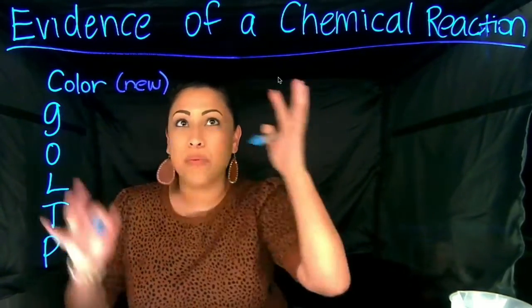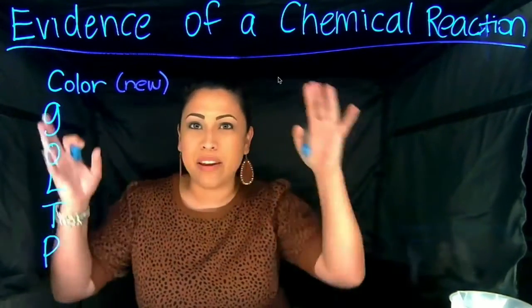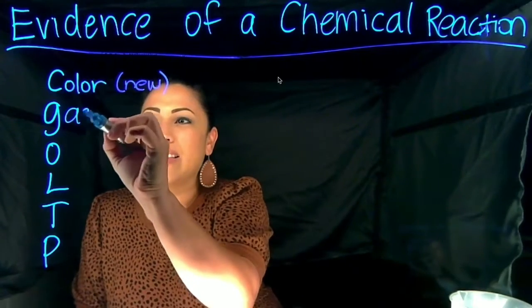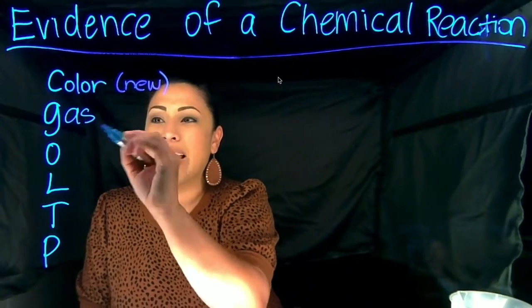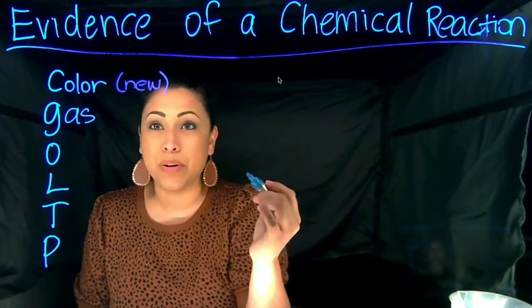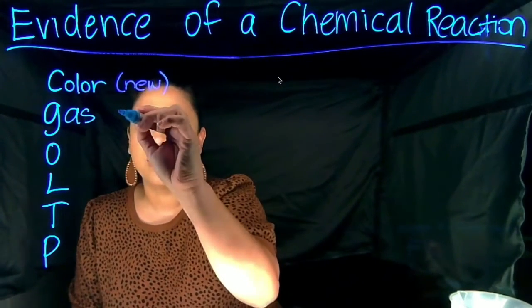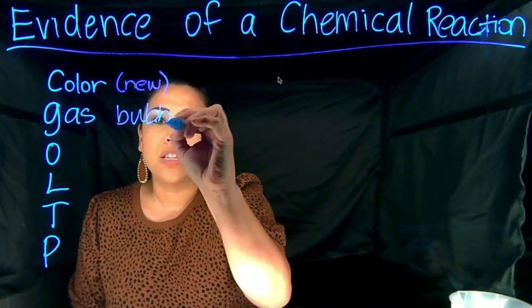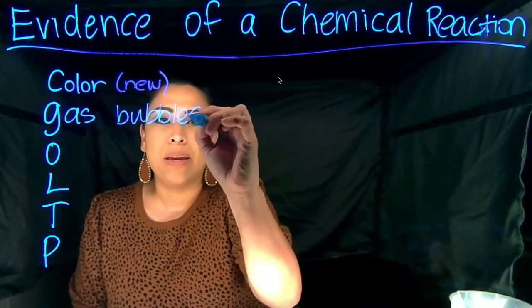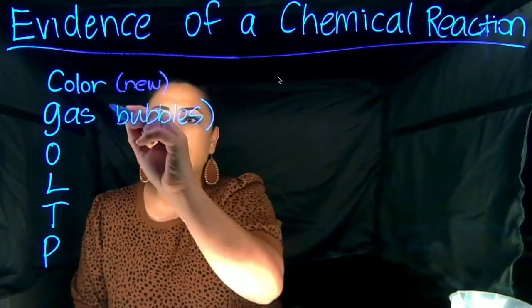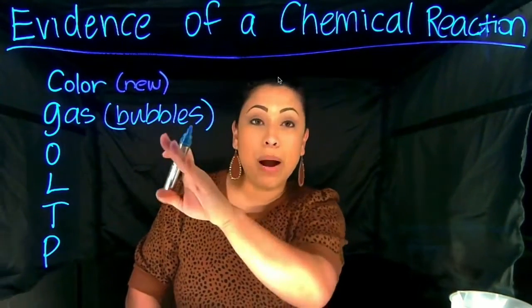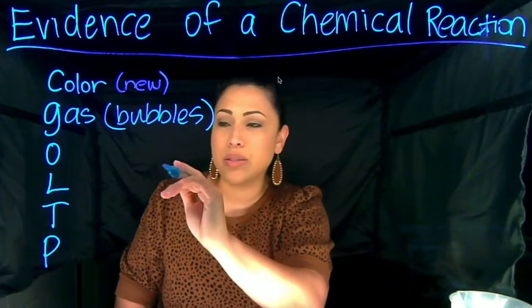The G — what else happened? What happened around the air? A gas is produced. We can also see that maybe in liquids, bubbles are produced.